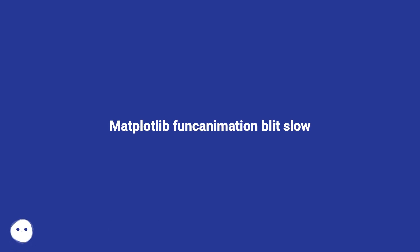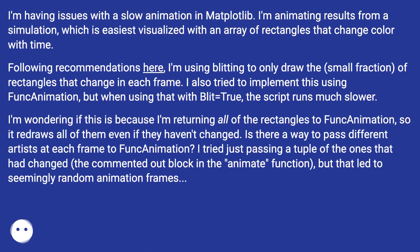Matplotlib funcAnimation blit slow. I'm having issues with a slow animation in matplotlib. I'm animating results from a simulation, which is easiest visualized with an array of rectangles that change color with time.